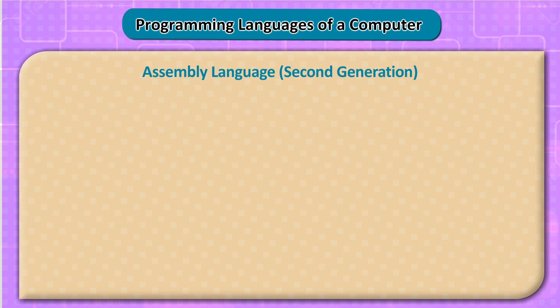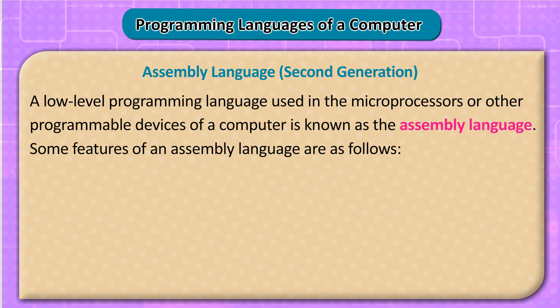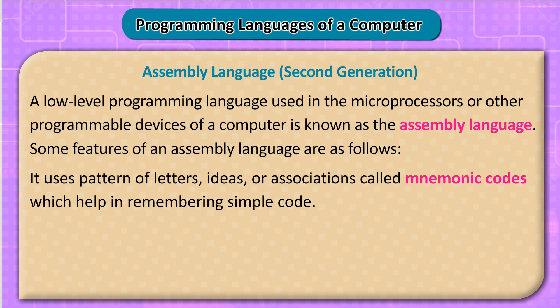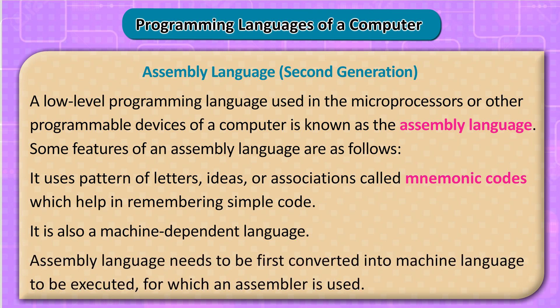Assembly Language — 2nd Generation: A low-level programming language used in microprocessors or other programmable devices of a computer is known as assembly language. It uses patterns of letters or associations called mnemonic codes, which help in remembering simple code. It is also a machine-dependent language. Assembly language needs to be first converted into machine language to be executed, for which an assembler is used.